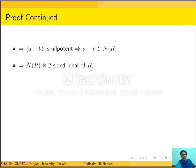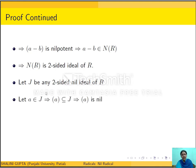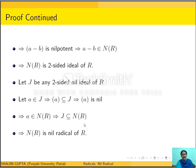Thus a − b ∈ n(R), so n(R) is a two-sided ideal of R. Now suppose J is any other two-sided nil ideal of R, and let a ∈ J. Then the two-sided ideal generated by a is contained in J, which is nil, so the ideal generated by a is nil, meaning a ∈ n(R). Therefore J ⊆ n(R). Thus n(R) is the largest two-sided nil ideal of R — it is the nil radical. Hence we have shown the existence of the nil radical of a ring R.